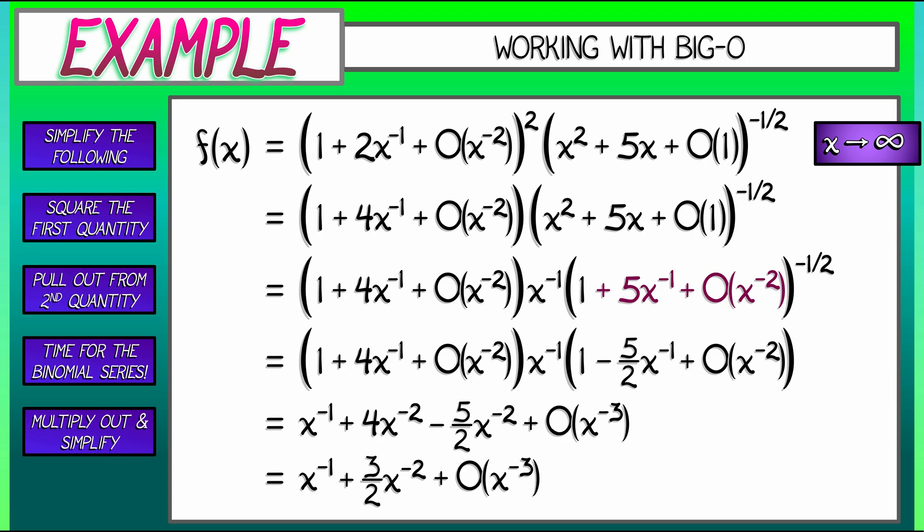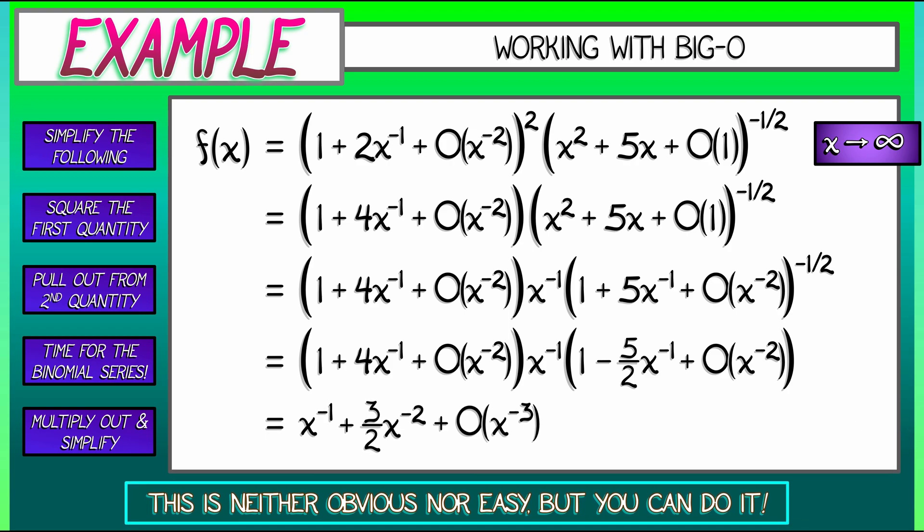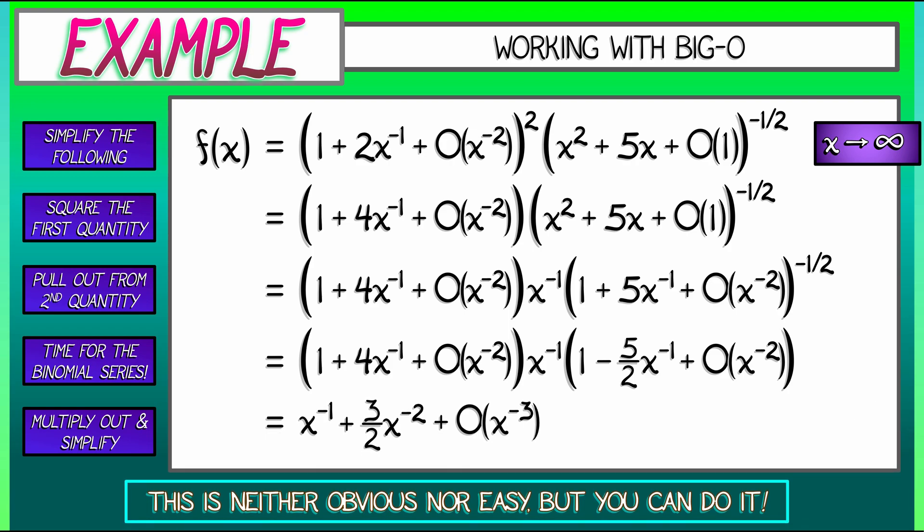Now, this is not an easy problem. You might have to go through this one again. This answer is not obvious from the beginning, but you can do it. You can do the algebra, and you can find out not only how quickly this function is going to 0 as x goes to infinity, but how much uncertainty you have in how it goes to 0. You've got that Big-O of x to the minus 3 at the end. This is a very cool application of the Big-O algebra that we have learned. You can do it.